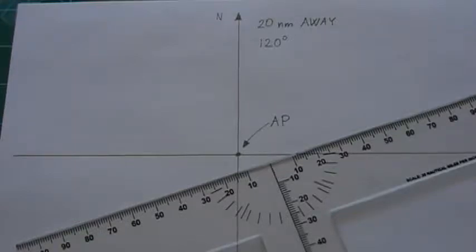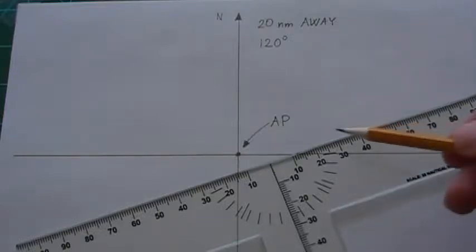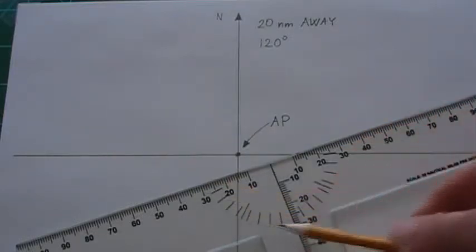In this video I demonstrate the plotting of a celestial line of position or LOP using the t-plotter which is also equipped with a protractor.